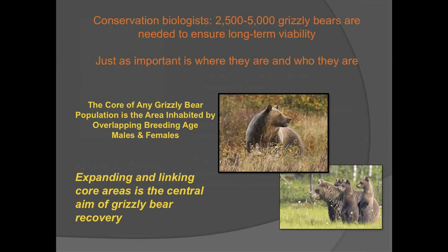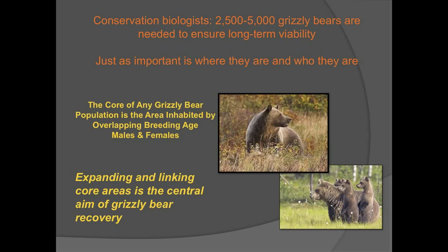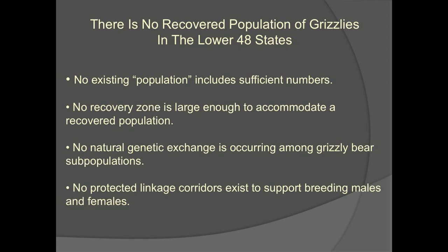It is long overdue for Montana Fish, Wildlife, and Parks, the U.S. Fish and Wildlife Service, and other state and federal agencies to recognize the well-documented scientific reality that any truly recovered grizzly bear population will include thousands of individuals. In the Northern Rockies, this will require protected core areas, each with a healthy subpopulation, all linked by corridors regularly occupied by successfully breeding bears. Creating this landscape must be the aim of grizzly bear recovery. At present, there is no recovered population of grizzlies in the lower 48 states — no existing population includes sufficient grizzlies to be considered recovered, and no recovery area is even large enough to accommodate a recovered population. Natural genetic exchange does not occur among all grizzly bear subpopulations, and no protected linkage corridors exist that can support breeding bears.